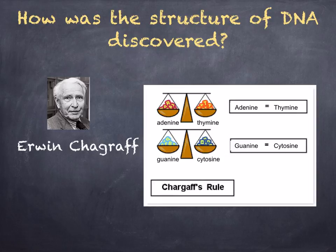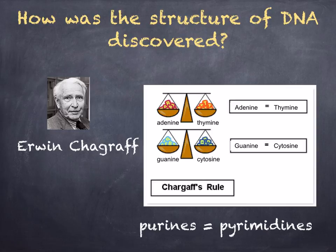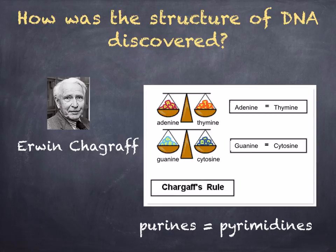In other words, the total amount of purines — adenine and guanine — is equal to the total amount of pyrimidines — thymine and cytosine. This second major conclusion is known as Chargaff's rule: the amount of adenine is equal to the amount of thymine, and the amount of guanine is equal to the amount of cytosine.